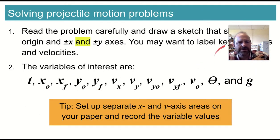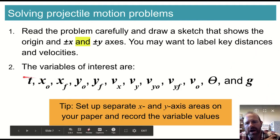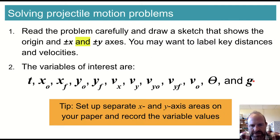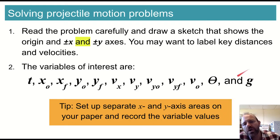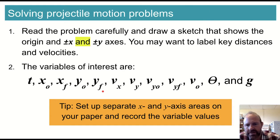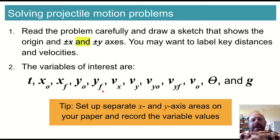Looking at all of these variables — there are a lot — time, angle, and little g are pretty straightforward. The rest have subscripts that tell you what they mean. We've basically doubled the variables of position and velocity to include initial and final positions in both x and y, and initial and final velocities in both x and y, plus total initial and final velocity, for which we need the angle to completely specify them. The big tip is to separate your x and y information — literally split the page, put them on opposite sides of a line — to write everything down and keep track of it.